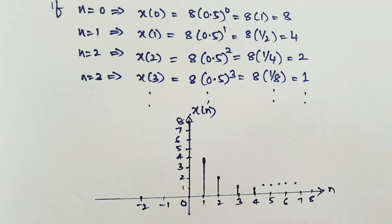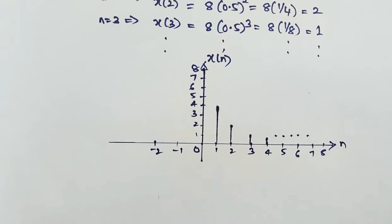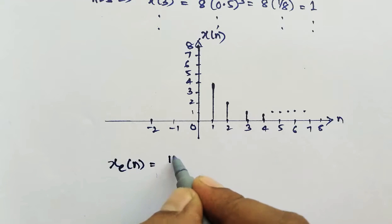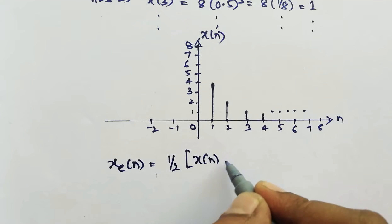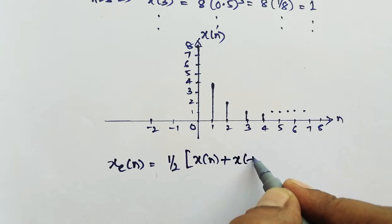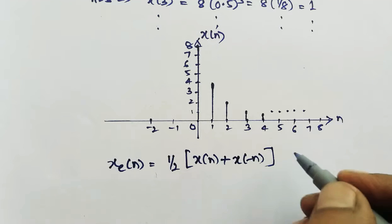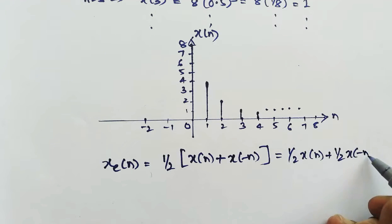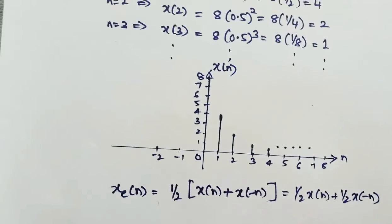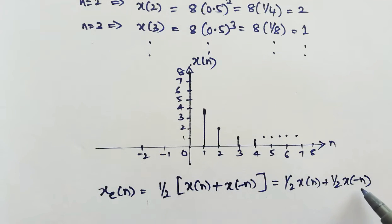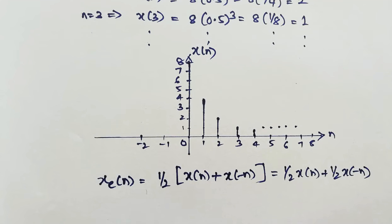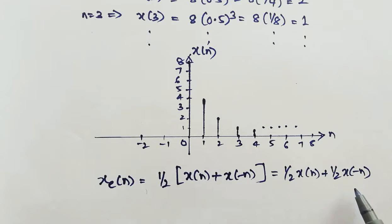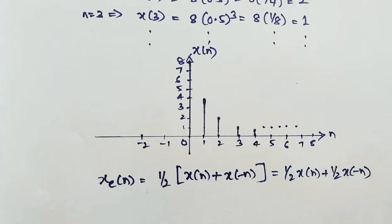Next is very simple. We have to find the even component and odd component. The mathematical expression for the even component is: x_e of n equals 1 by 2 times x of n plus 1 by 2 times x of minus n. Here x of minus n is the reflection version of x of n — we replace n by minus n, which is the mirror image or time folding.